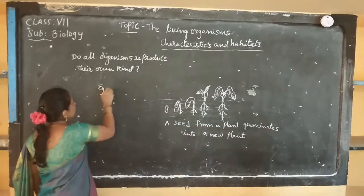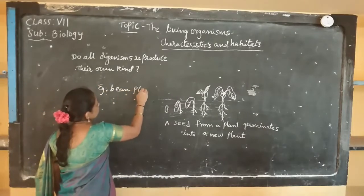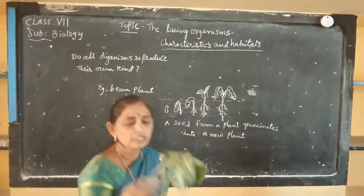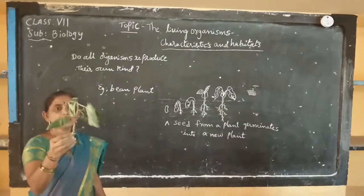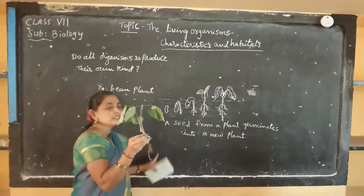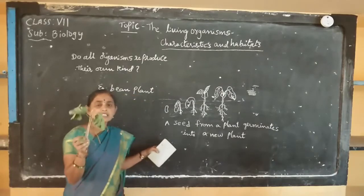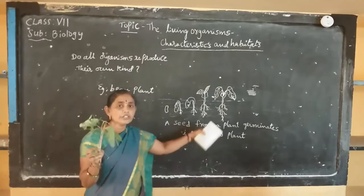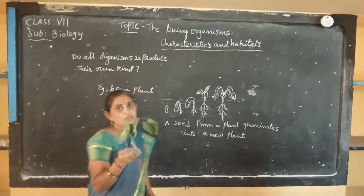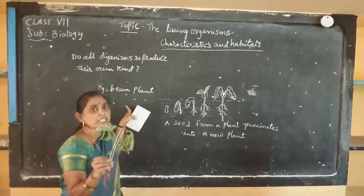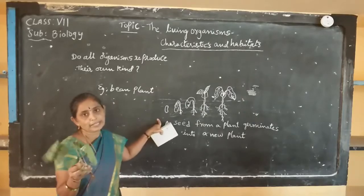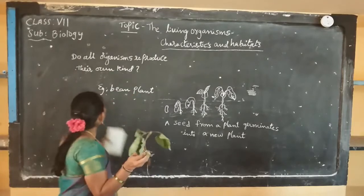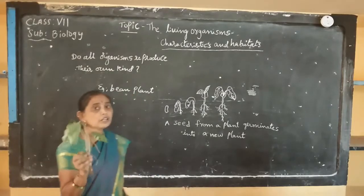For example, a bean plant — the seed is planted in the soil, and within one week, at seven days, it generates a new plant under favorable conditions. We plant a bean seed and it develops into a bean plant. We plant a mango seed and it develops into a mango plant. This means all organisms reproduce their own kind.